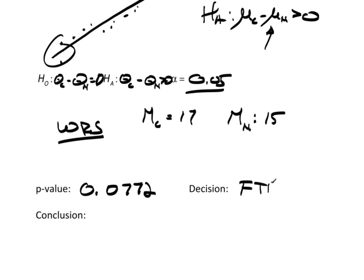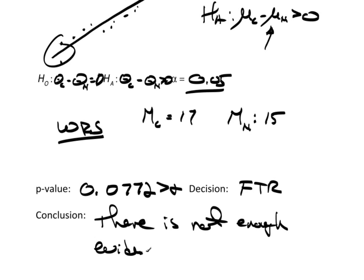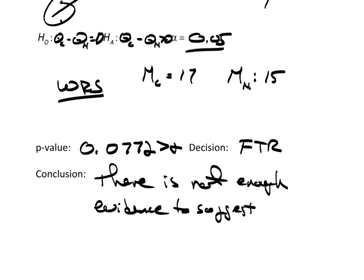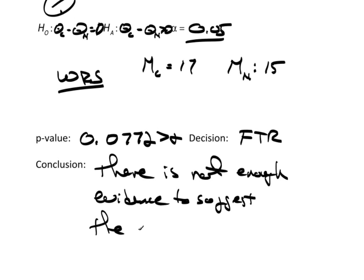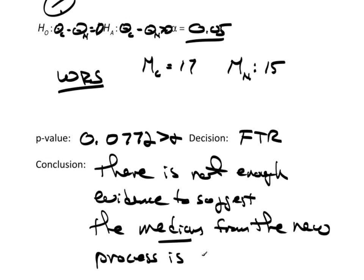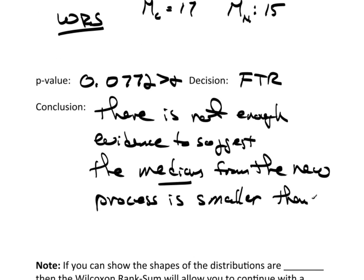The p-value was 0.0772. So, my decision would be fail to reject because this is greater than alpha. And then the conclusion is there is not enough evidence to suggest the median from the new process is smaller or less than the current process.